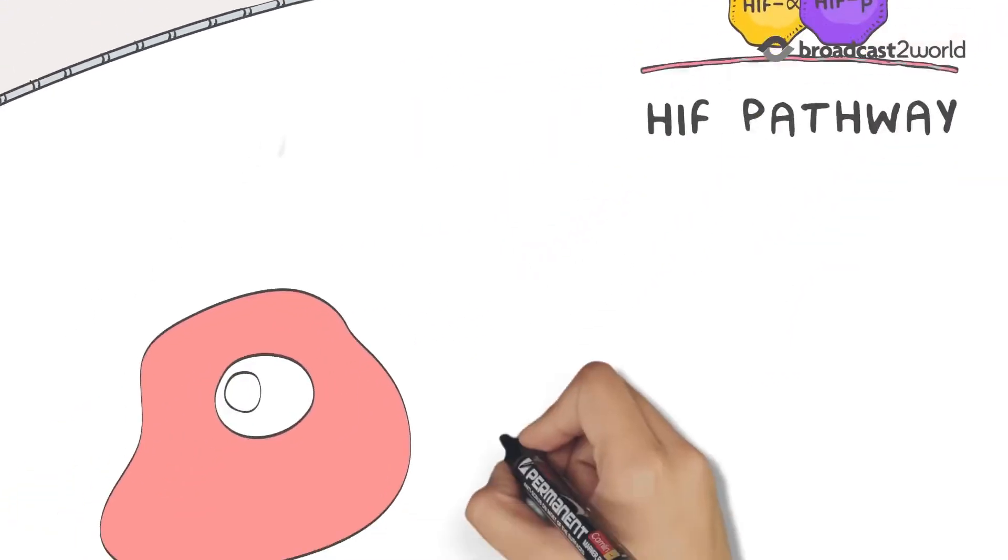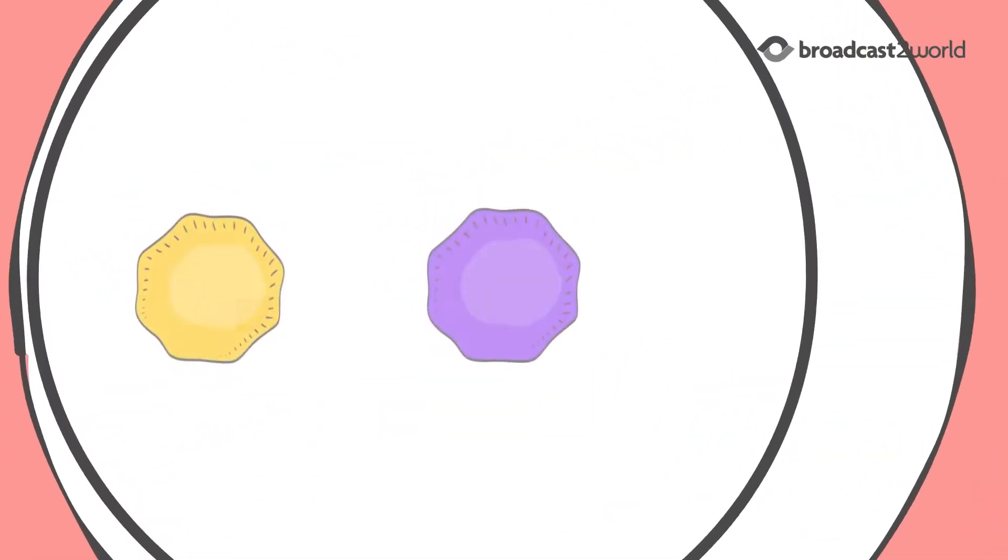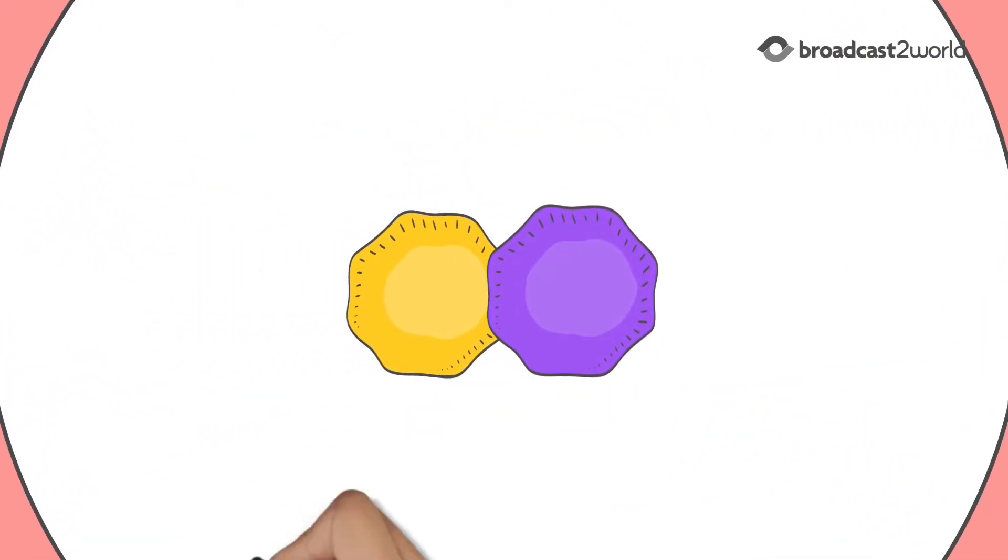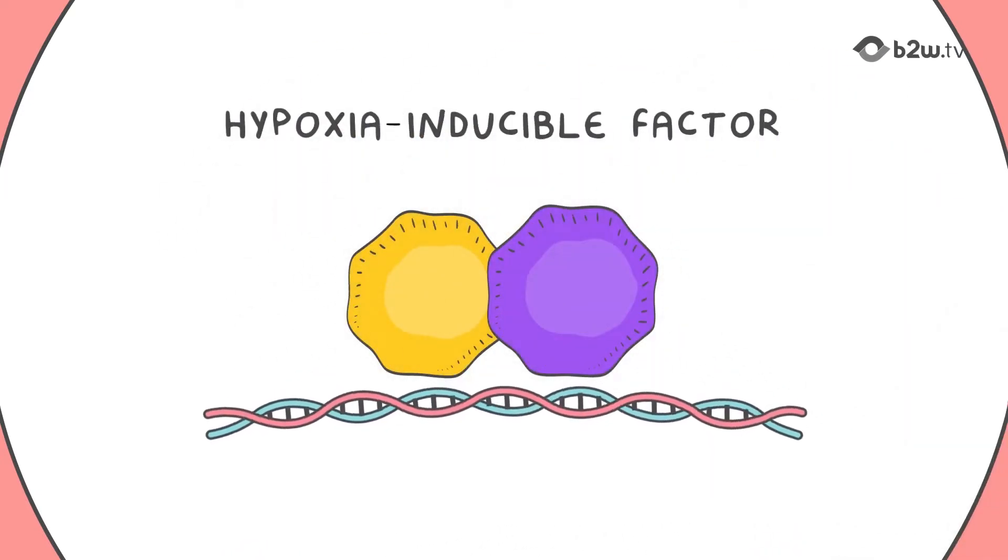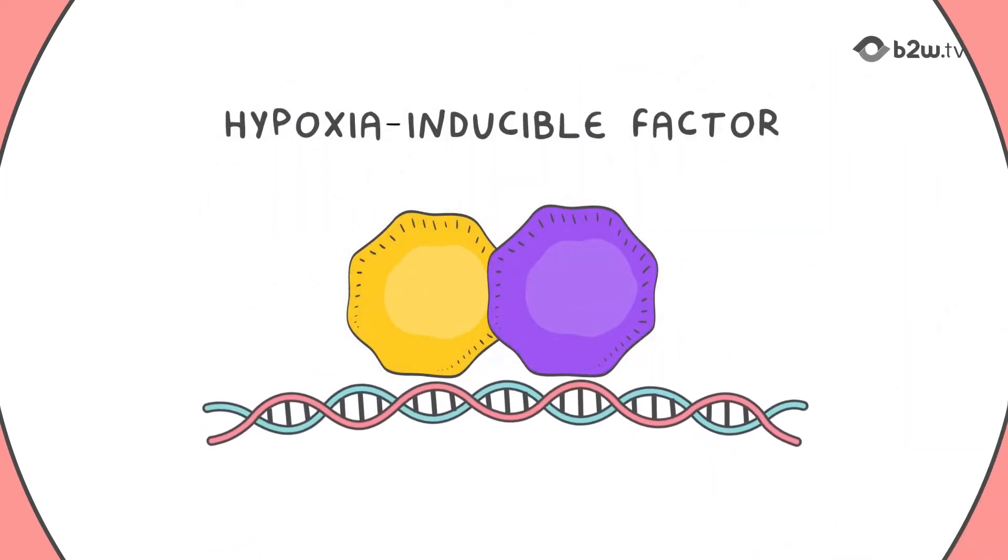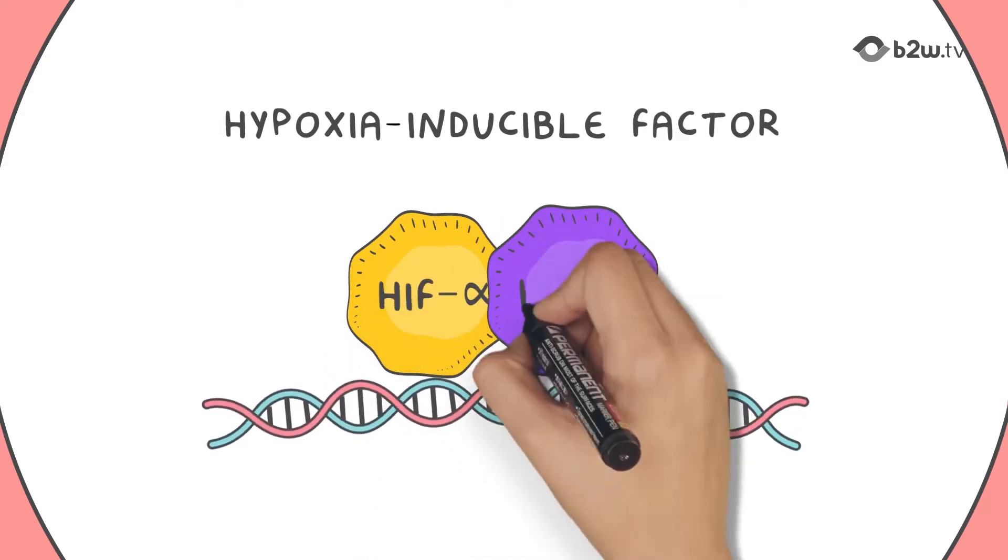It all starts inside the cell. At the core of this oxygen-sensing pathway is the transcription factor known as hypoxia-inducible factor, or HIF, composed of two subunits, HIF-alpha and HIF-beta.